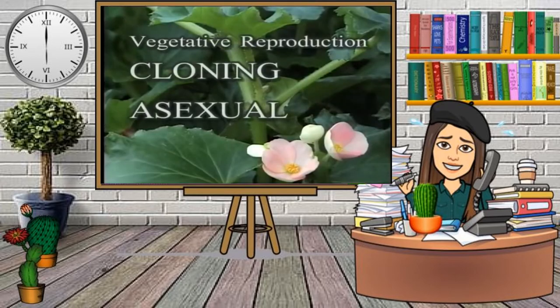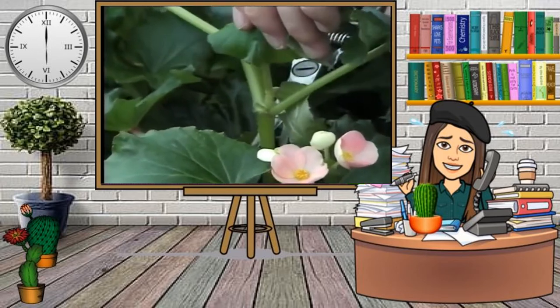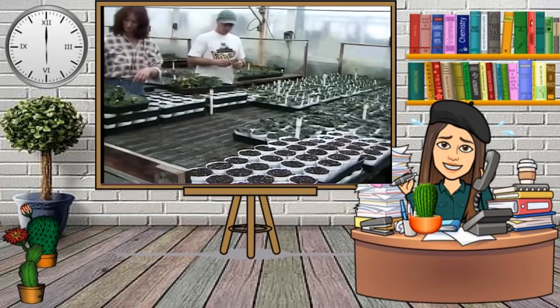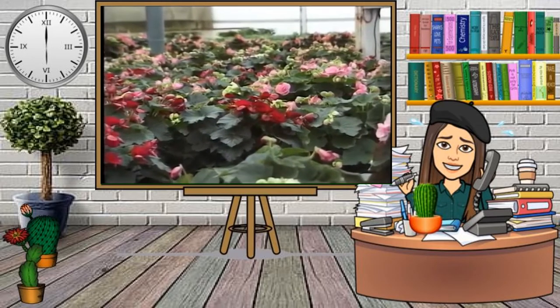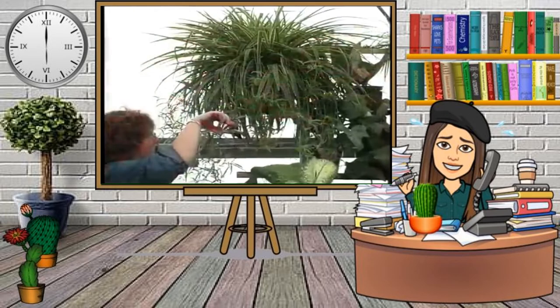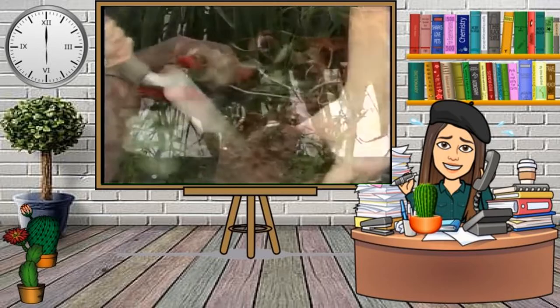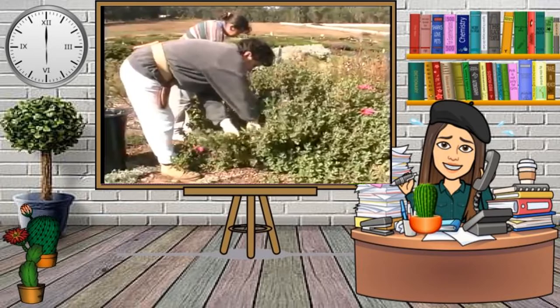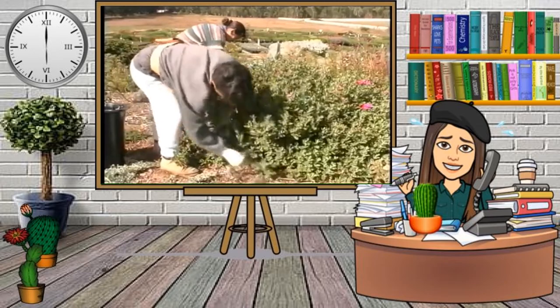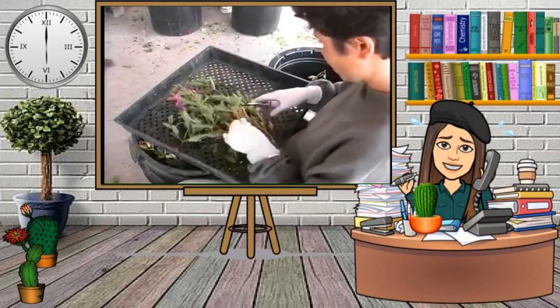In vegetative reproduction, also referred to as cloning or asexual reproduction, the plant is reproduced using a portion of vegetative tissue such as a stem cutting. The resulting plants are genetically identical to the single parent from which the tissues were taken. Other methods include division and layering. For example, the flowers of this rock rose have been selected for their deep pink color, and to retain that color, this variety must be propagated using vegetative techniques such as cuttings.